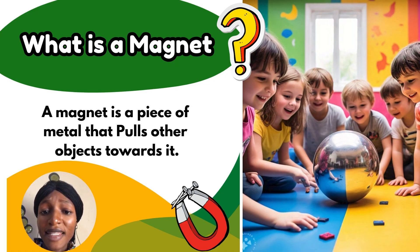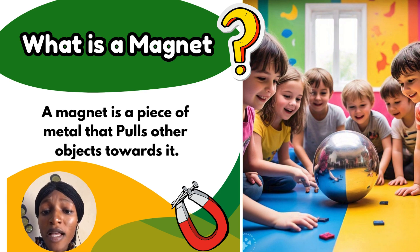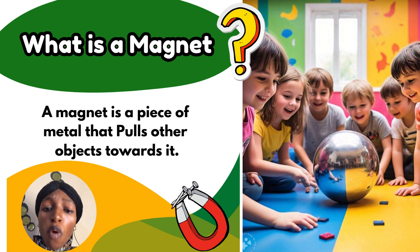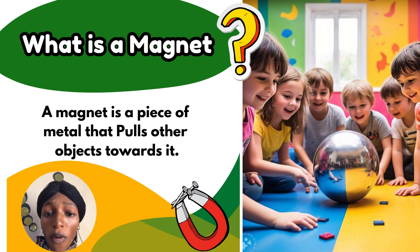What is a magnet? A magnet is a piece of metal that pulls other objects towards it. It pulls other objects towards it.